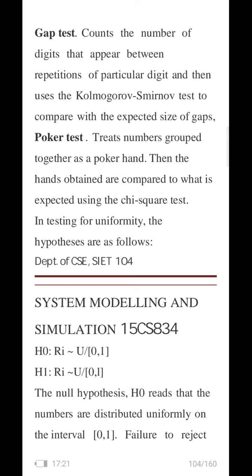In the poker test, the hands obtained are compared with what is expected using the chi-square test — this is testing for uniformity. 'Poker hand' refers to the concept from playing cards where cards with similar symbols are grouped together. Similarly here, numbers are grouped together as a poker hand, and the hands obtained are compared to what is expected using the chi-square or uniformity test.